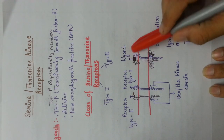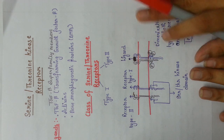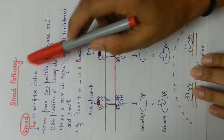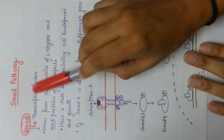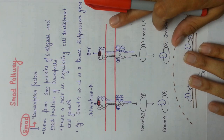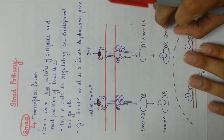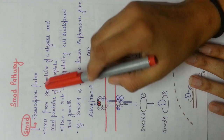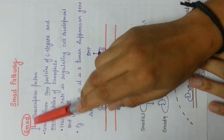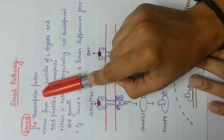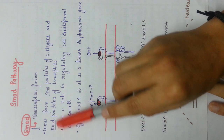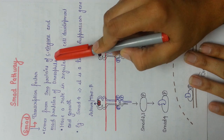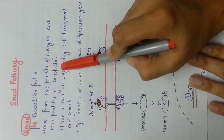We will see how this pathway works with the help of a simple example — your SMAD pathway. First of all, what is a SMAD? SMAD is a kind of protein, and that too a transcription factor. It comes from two things: first is your SMA proteins of C. elegans, and MAD proteins of Drosophila.